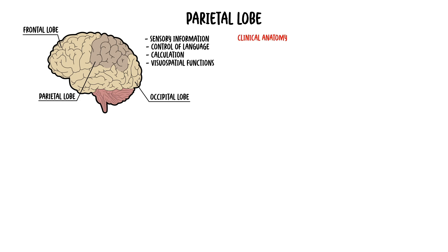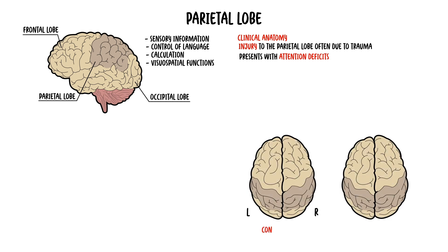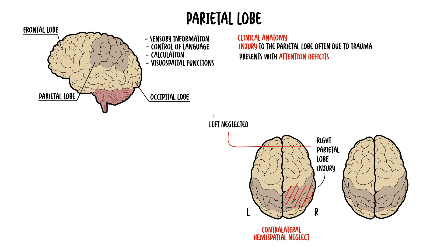Injury to the parietal lobe often occurs due to trauma, such as from a car accident or fall, but it can also occur from a stroke. Injury often presents with attention deficits, such as contralateral hemispatial neglect syndrome, where the patient does not pay attention to one side of their body contralateral to the site of injury. So here, a right-sided parietal lobe injury results in left-sided neglect, the left side being contralateral to the right-sided injury.